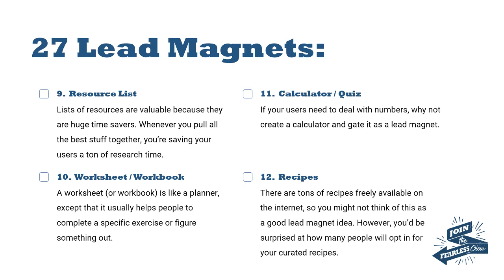Number twelve is recipes. Everybody has a food recipe book, but these days we probably turn to recipes on various websites online. You might not think of these as a good lead magnet idea, however you'd be surprised at how many people will opt in for curated recipes. Recipes are like hints and tips — when you pull a load together you end up with some kind of outcome, like pulling ingredients together to make a dish.